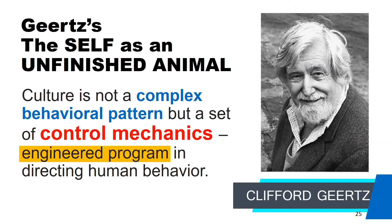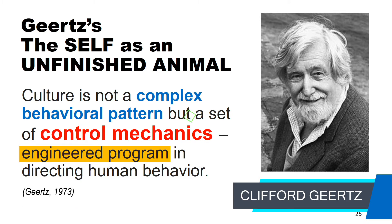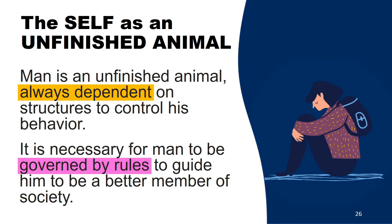According to Clifford Geertz, the self is an unfinished animal. Culture is not a complex behavioral pattern but a set of control mechanics — an engineered program for directing human behavior. Culture functions like a guiding structure, just as a child learns to ride a bike first through training wheels before balancing himself. Man is an unfinished animal, always dependent on structures to control his behavior. It is necessary for man to be governed by rules to guide him to be a better member of society.